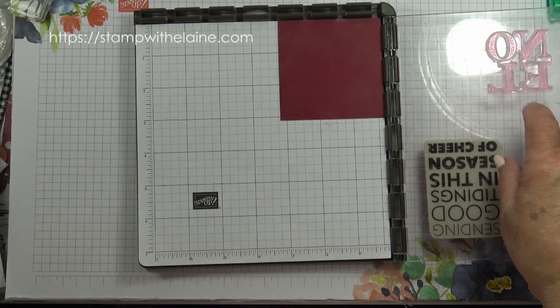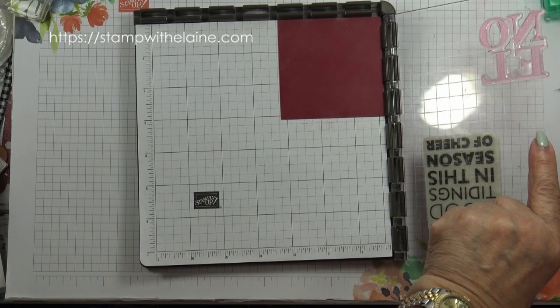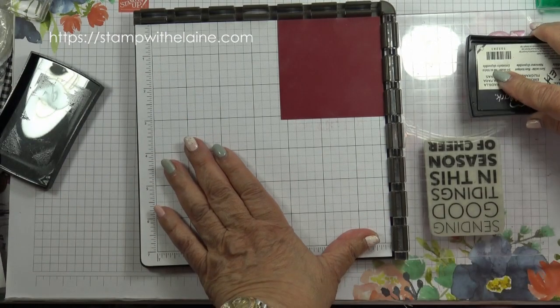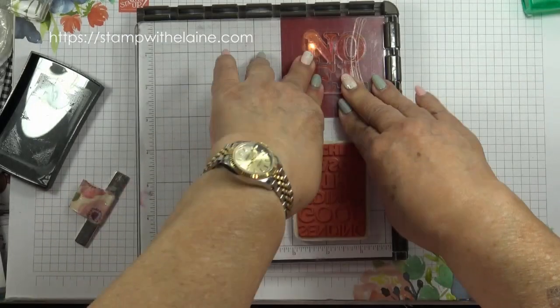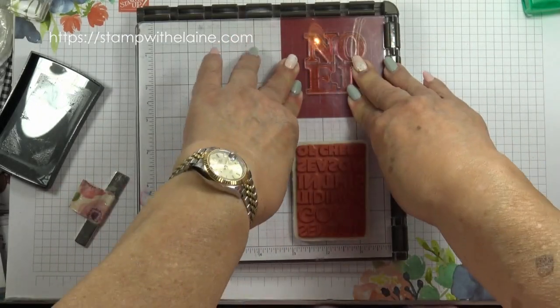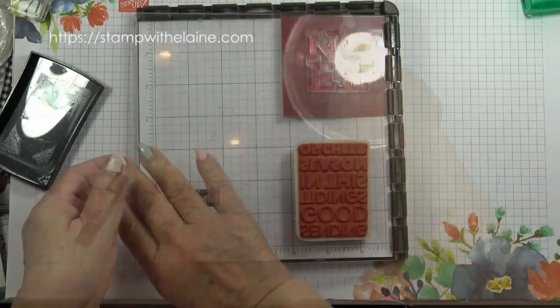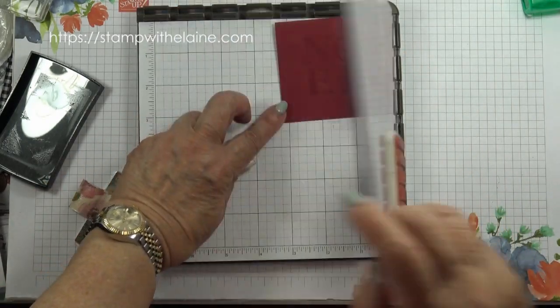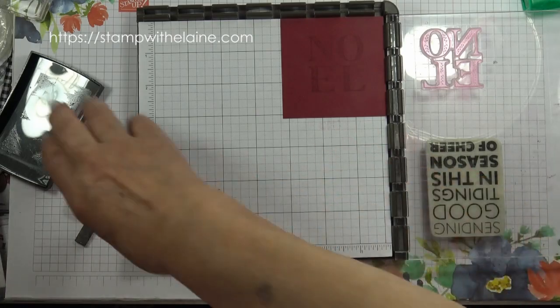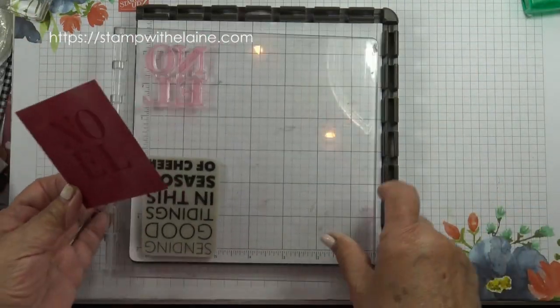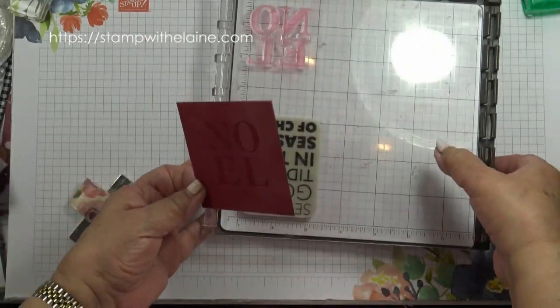And then use Versamark ink to stamp your noel words. I've still got my Stamparatus, although it's no longer in the Stampin' Up product line. There's no reason why you can't still use it if you do have a Stamparatus. And for those who don't, you can still stamp it the normal way.